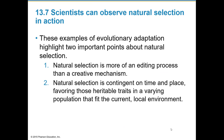These examples of evolutionary adaptation highlight two important points about natural selection: it can be thought of as an editing process rather than a creative mechanism. Natural selection is contingent on time and place and will favor heritable traits in a varying population that fit the current local environment.